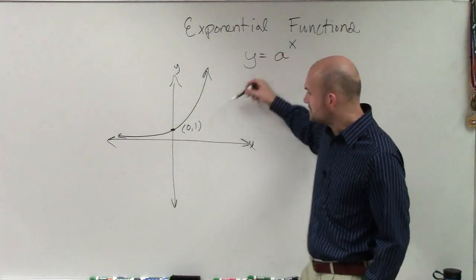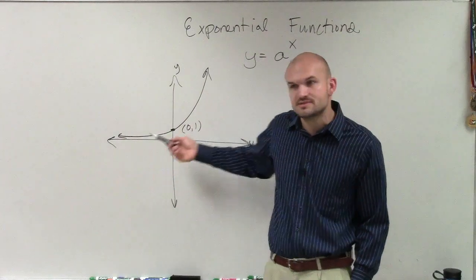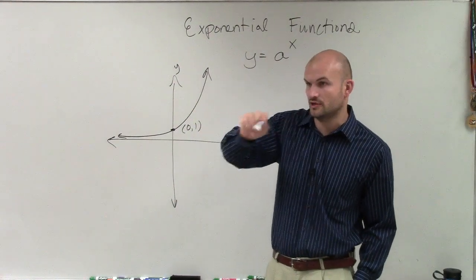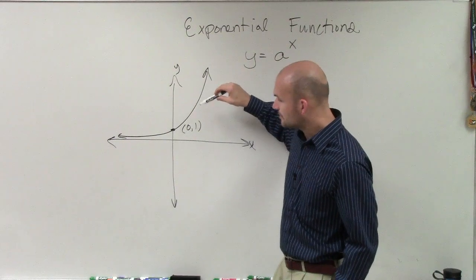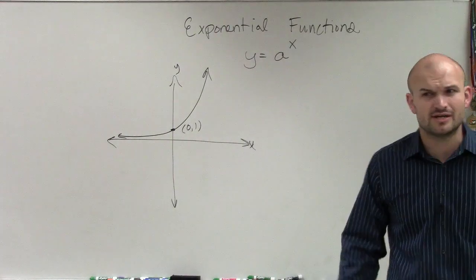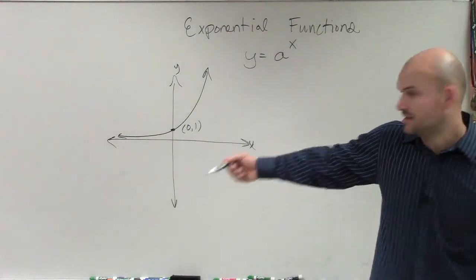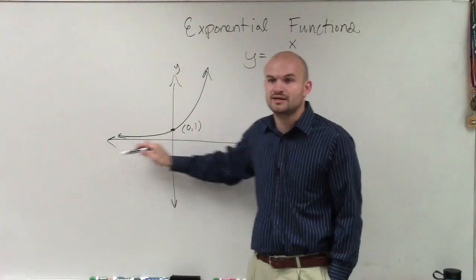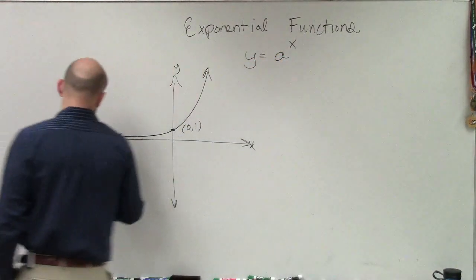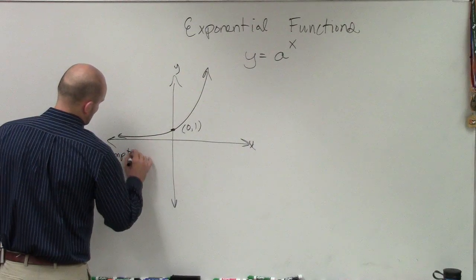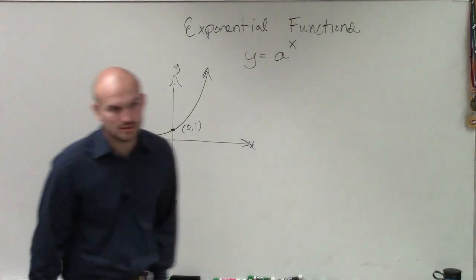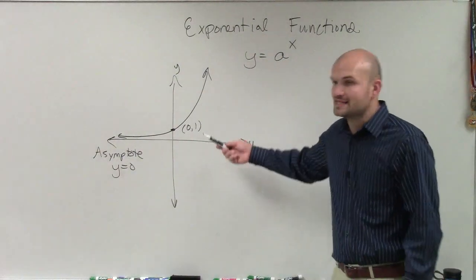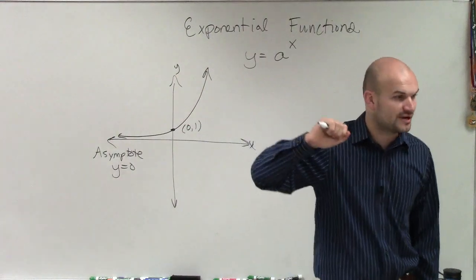Also, you guys can see that this graph looks like it keeps on approaching—and we're going to talk more about asymptotes later because we didn't really get to touch them in rational functions. So you guys can see that it's approaching 0, but it actually never crosses. This graph doesn't have any negative values to it, right? So what it is, is we say it's approaching our vertical line of y equals 0.